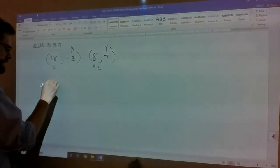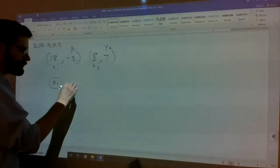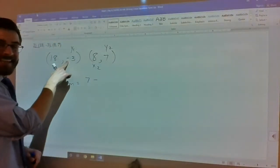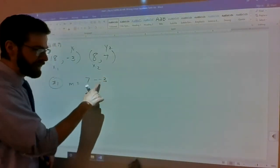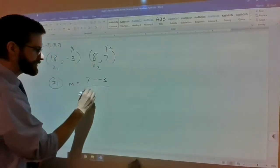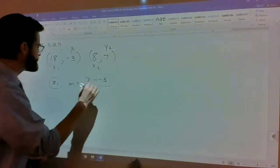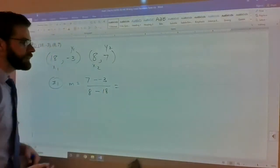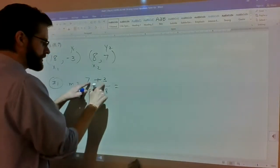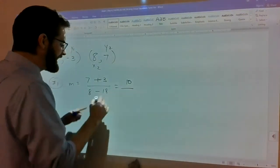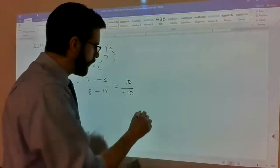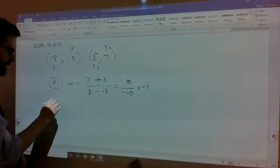I'm going to use step one. M is equal to seven. The operation for the formula is minus. Now it's minus a negative three. Make sure it's minus negative three. Divided by x2, operation minus 18. So a minus negative just turns into a plus. Seven plus three is ten. Eight minus 18 is negative ten. This is just negative one. M equals negative one.